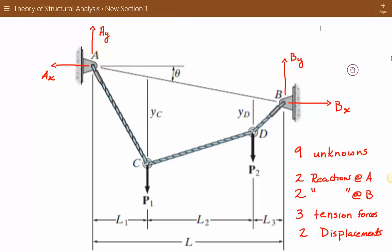If we knew L1, L2, and L3, and we knew the loads that were acting, P1 and P2, this problem would have nine unknowns. The nine unknowns are the two reactions at support location A, two reactions at A, two reactions at support location B in the horizontal and vertical direction.